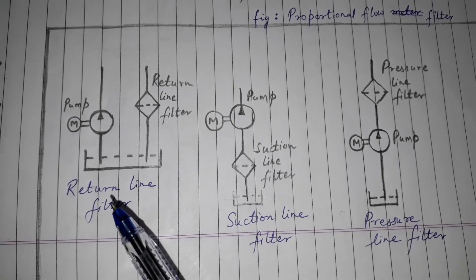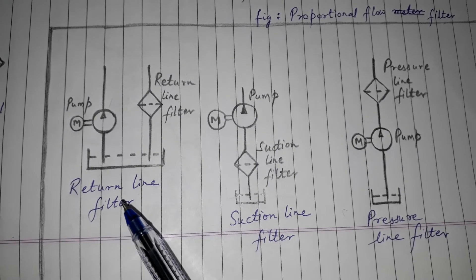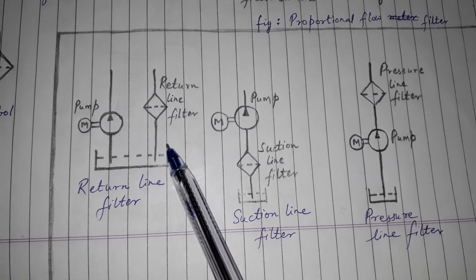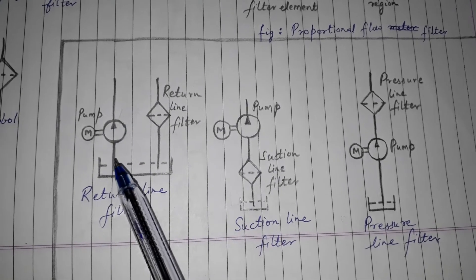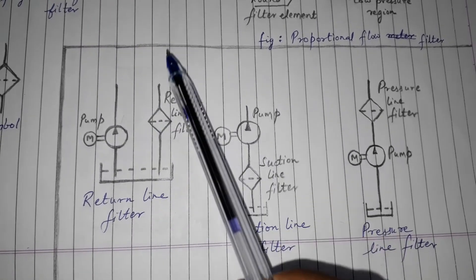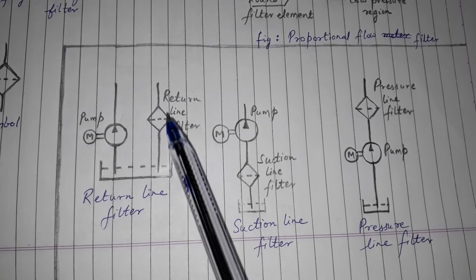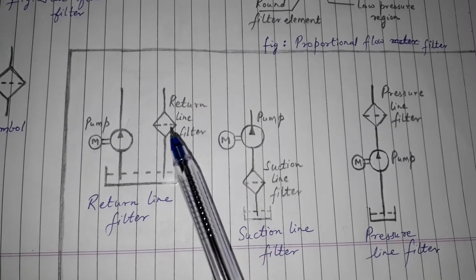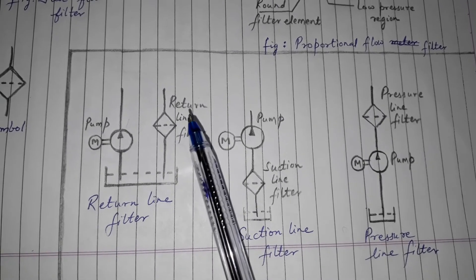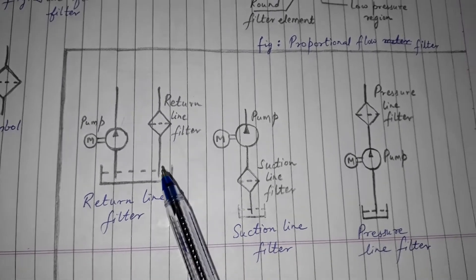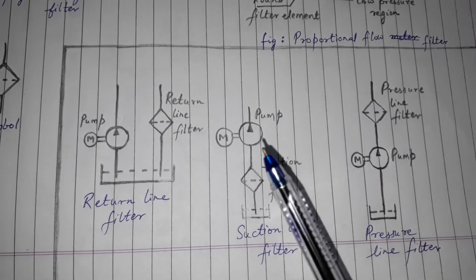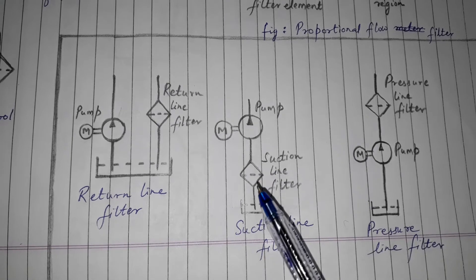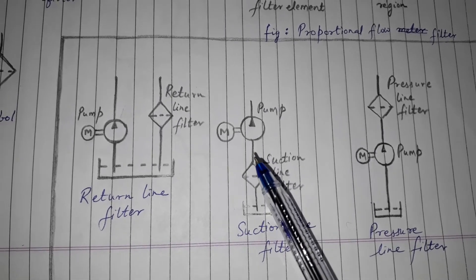The first location is the return line filter, which is the most common location. The contaminants are removed only after the oil leaves the system. The oil goes into the system and while returning, it gets filtered — contaminants are removed when the oil is leaving the system and going to the tank or reservoir.